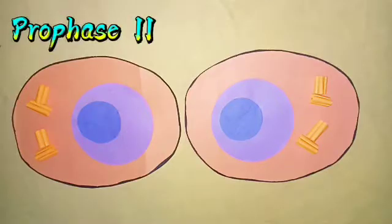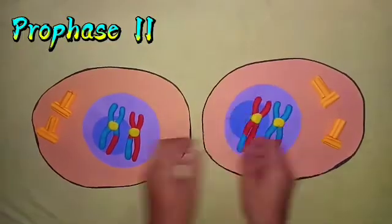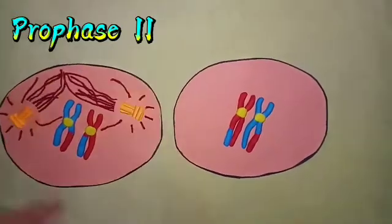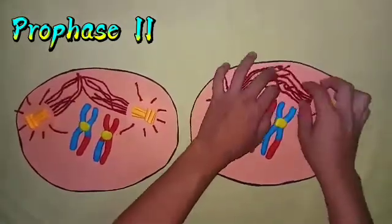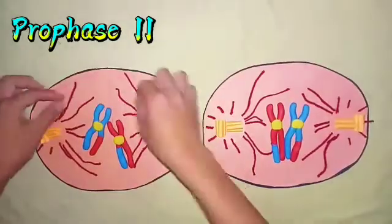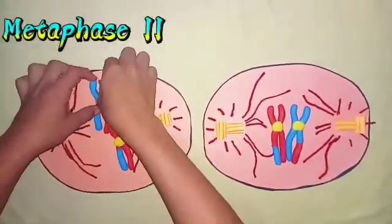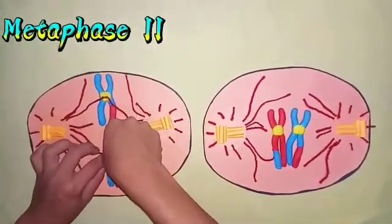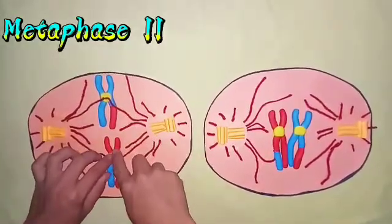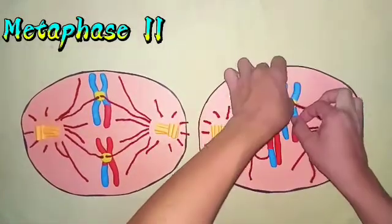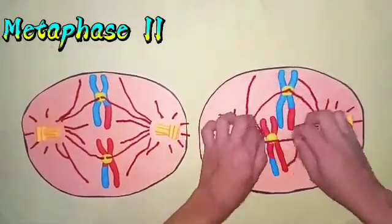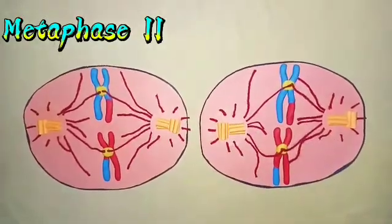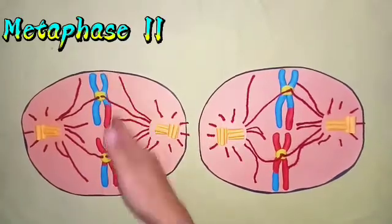In prophase 2, the chromosomes with two chromatids become visible as they condense, as the nuclear envelope and the nucleolus disappear and the spindle is forming. Now the cell will proceed to metaphase 2. In metaphase 2, the chromosomes with two chromatids line up at the equator. The spindle is fully formed. Although genetic recombination primarily occurs during meiosis 1, the way the chromosomes line up during metaphase 2 can also help to make unique daughter cells.